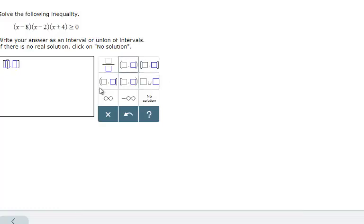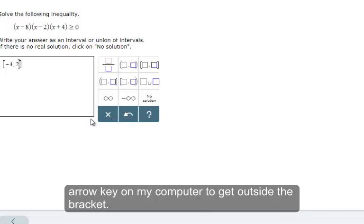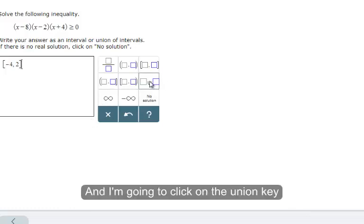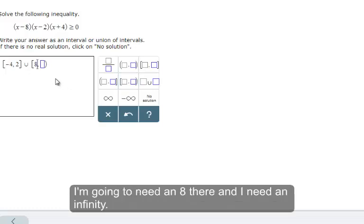Now notice if I click the Union tool inside, it puts it inside there. That is not going to be correct. So I'm going to undo that piece. And I'm going to use the arrow key on my computer to get outside the bracket. And I'm going to click on the Union key. And then I need a bracket and a parenthesis. And I'm going to need an eight there. And I need an infinity. And then I say done.